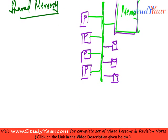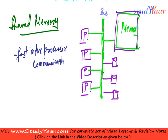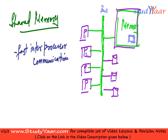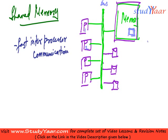What are the advantages of this Shared Memory Architecture? First, inter-processor communication is very fast, because there is no underlying network through which messages have to pass. For example, if P1 has to communicate to P2, P1 writes to a memory location and P2 reads from that memory location. That's it — inter-processor communication is fast.